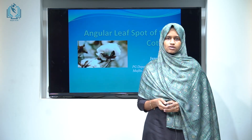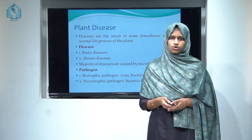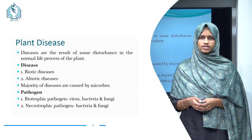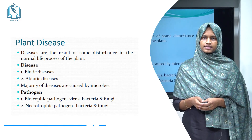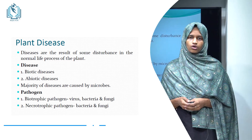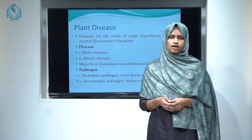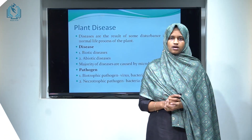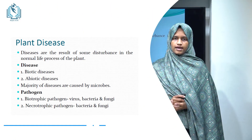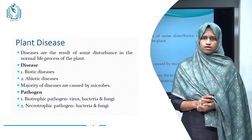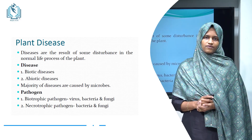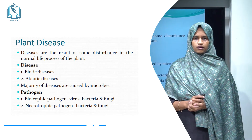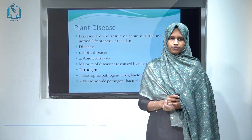It is a plant disease caused by bacteria. Plant disease is usually defined as the abnormal growth or dysfunction of the plant. Diseases are the result of some disturbances in the normal life process of the plant. Plant diseases are classified into two types: biotic disease and abiotic disease. Biotic diseases are caused by living organisms like bacteria, virus and fungus. Abiotic diseases are caused by non-living things like wind, air and water. Most of the diseases are caused by living things, that is microorganisms.